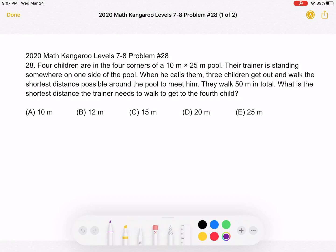A, 10 meters. B, 12 meters. C, 15 meters. D, 20 meters. Or E, 25 meters.